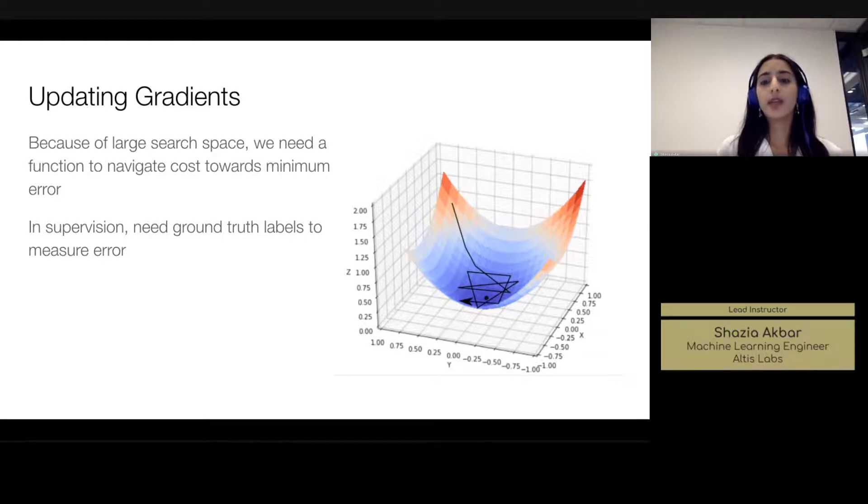When we say global minimum we mean the point at which we're making very few errors within the network architecture. Traditionally in a supervised learning framework we have a way of measuring error because we have ground truth labels that go hand in hand with the input data, and that way we can measure how well our network is performing.